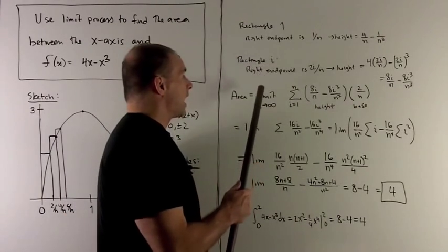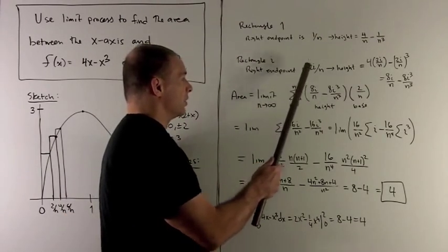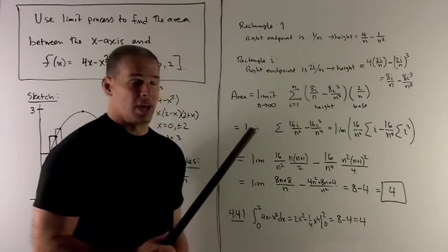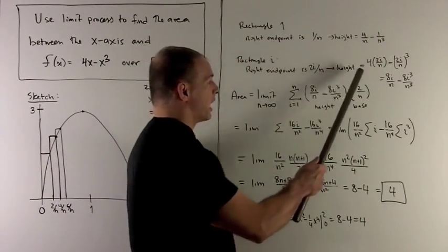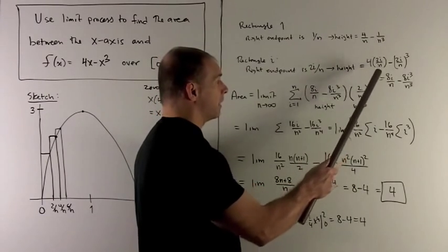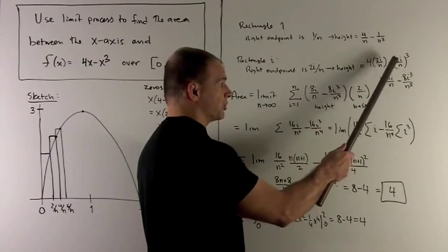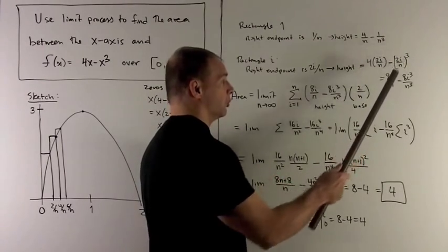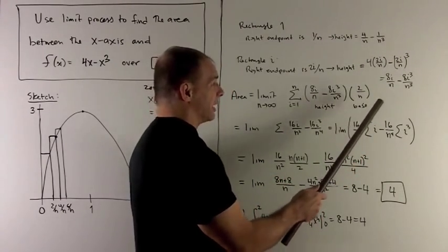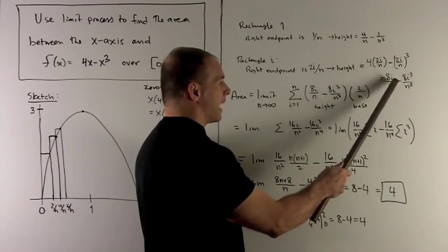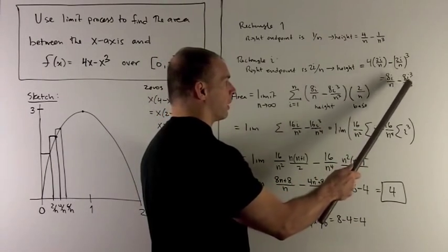For the i-th rectangle, the right endpoint is 2i over n, so the height for that rectangle is going to be 4 times 2i over n, which would be our x minus our x cubed, which is 2i over n cubed. When I write all that out, I'm going to get 8i over n minus 8i cubed over n cubed.